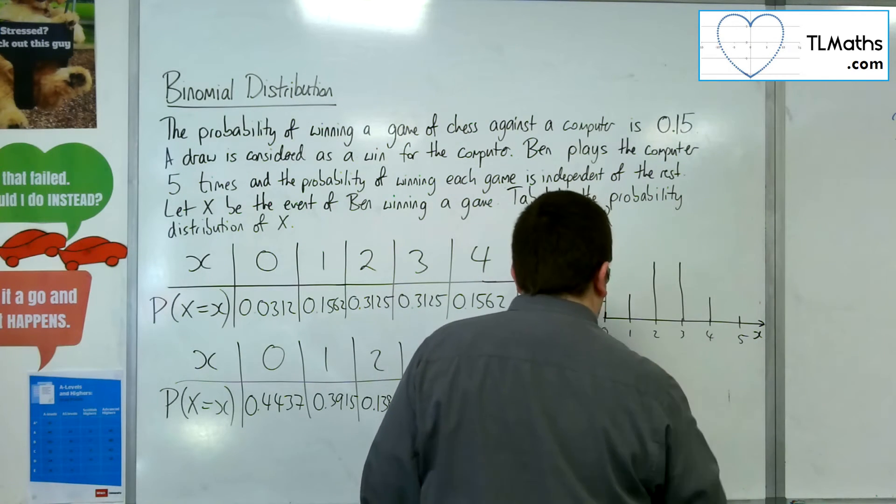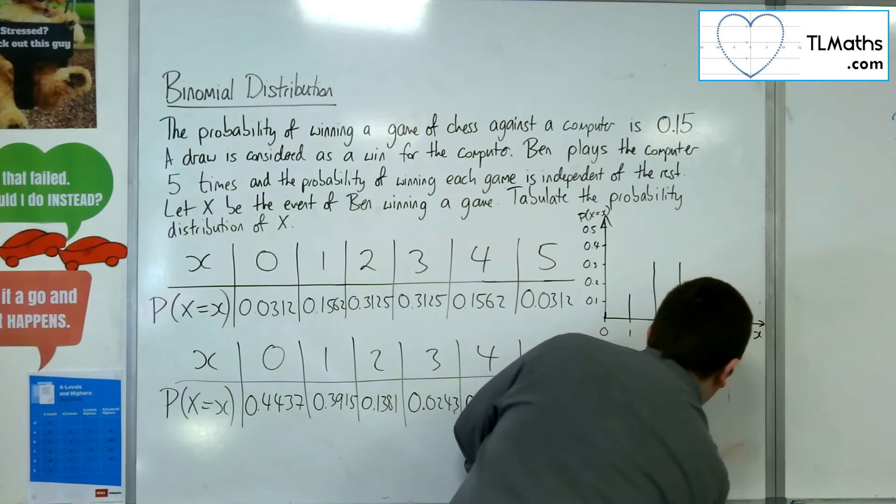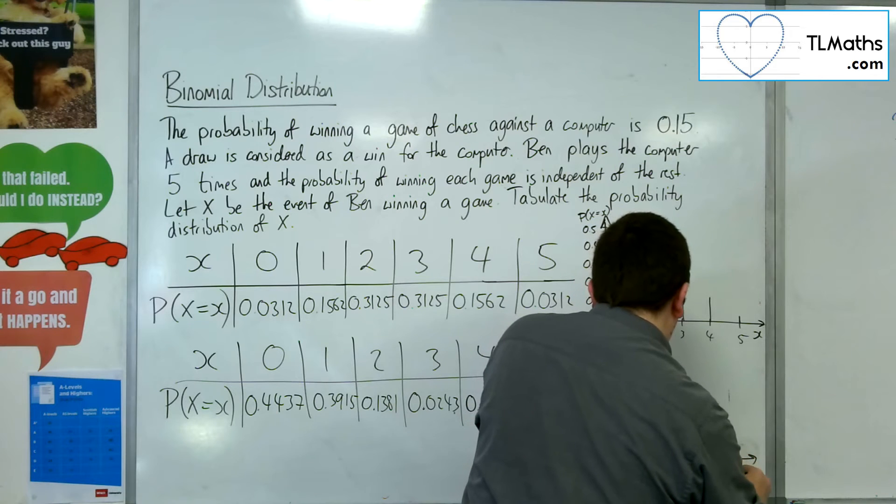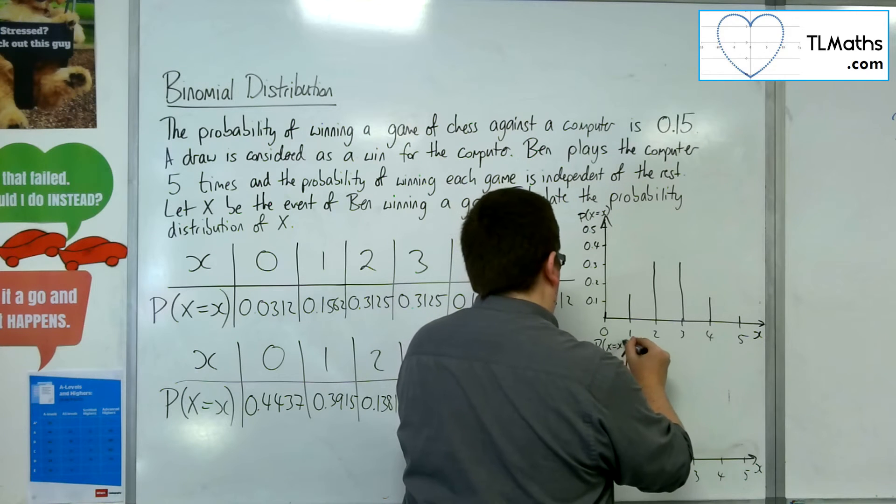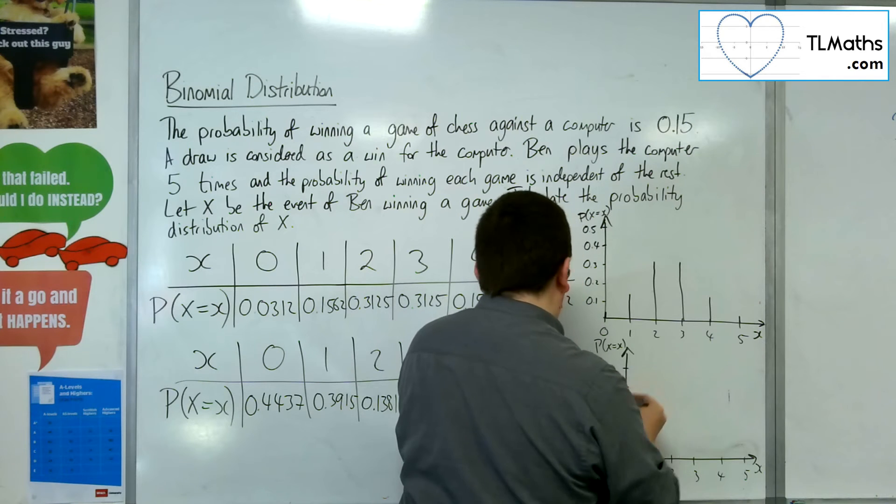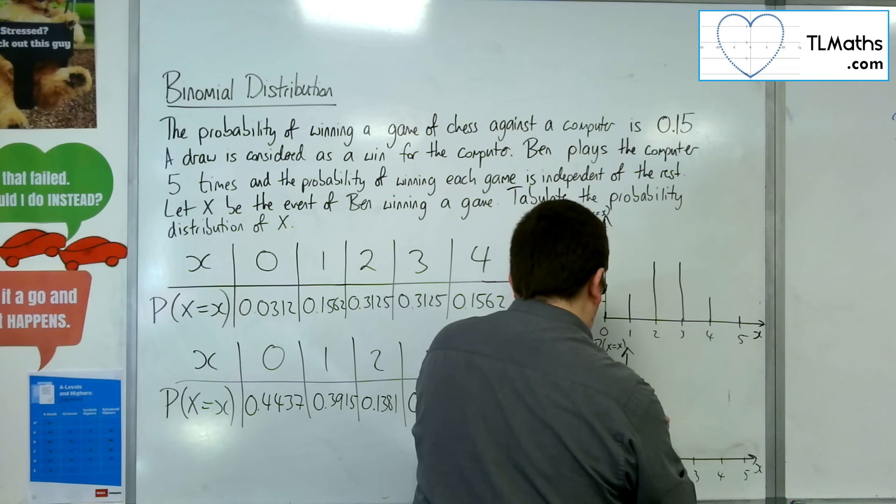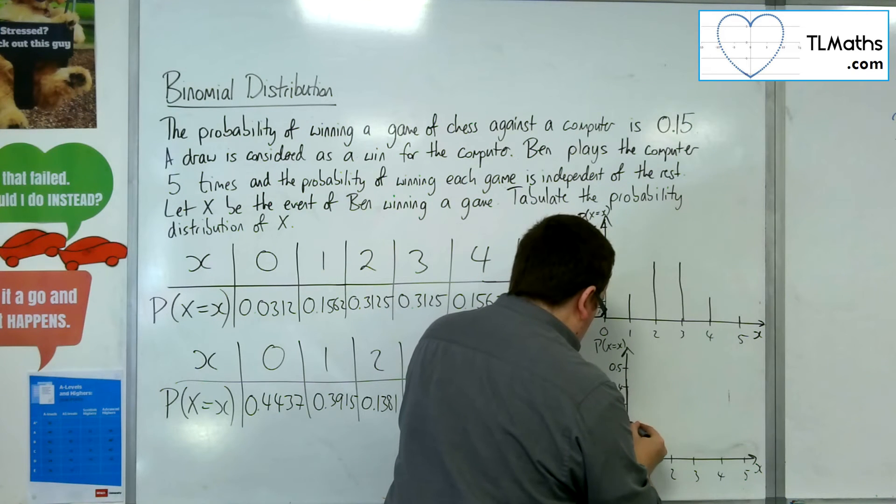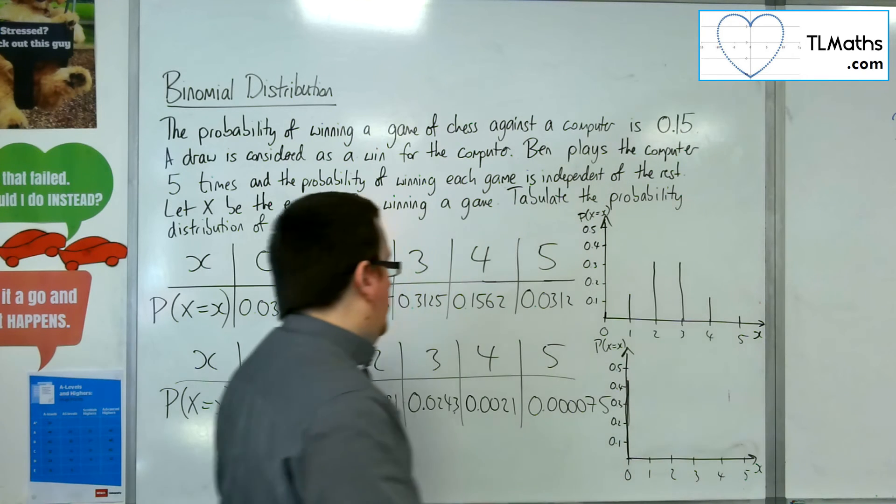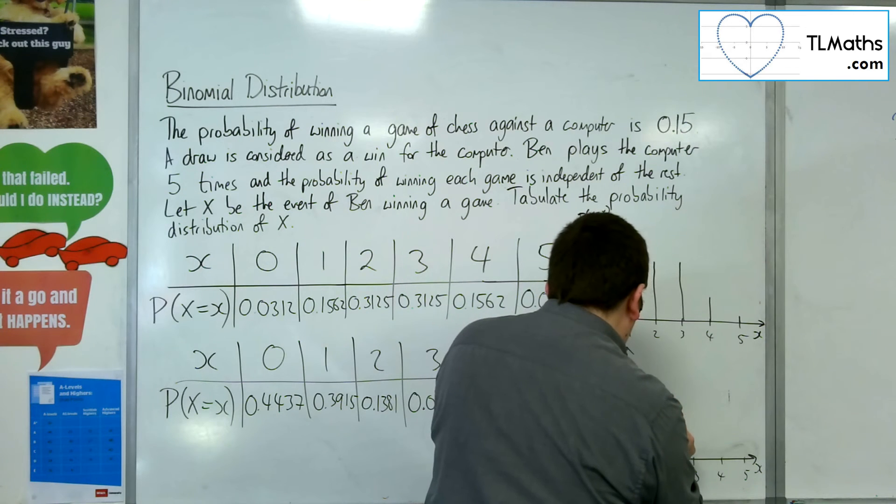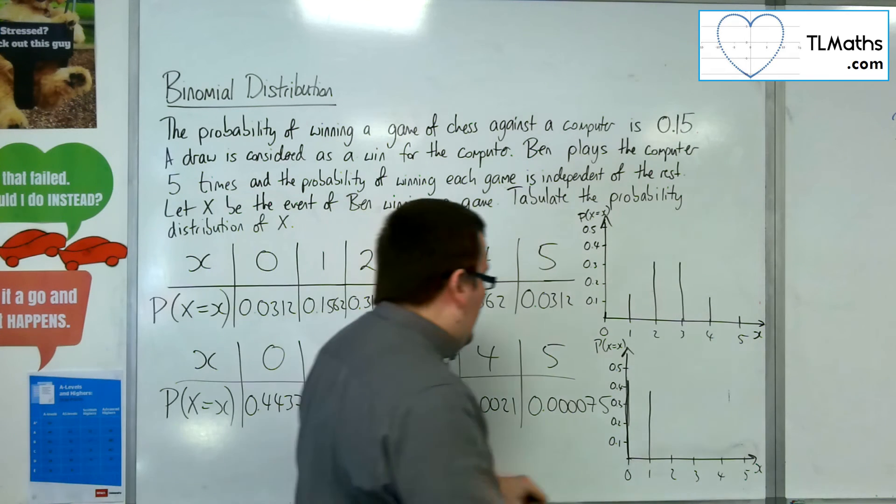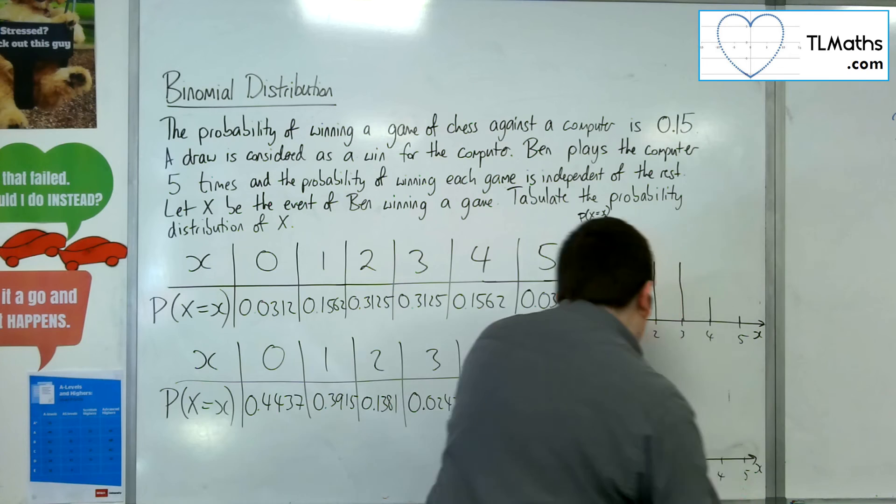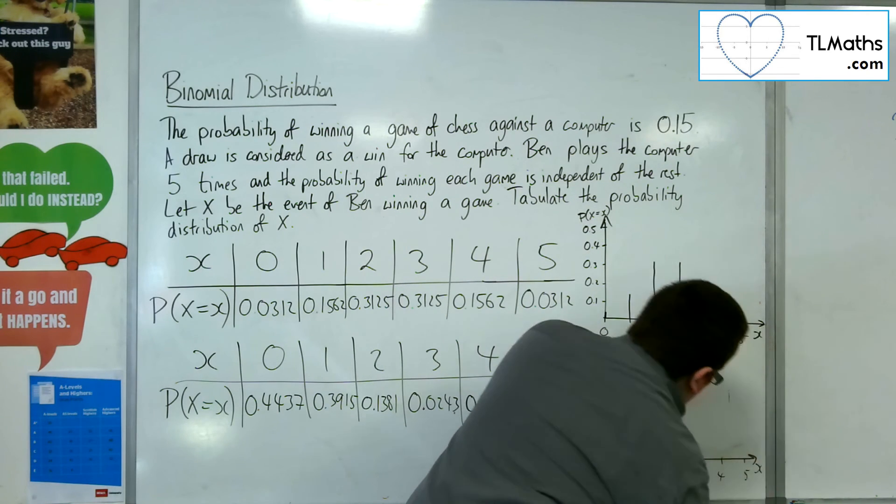So if you were to draw it, much like we've done there. Let me straighten that up a bit. So we've got 0, 1, 2, 3, 4, 5 along the bottom, and 0.1, 0.2, 0.3, 0.4, 0.5 up the side. So the probability of getting 0 is 0.4437, something like that. Then we've got 0.3915. Then we've got 0.1381, so it's about there. Then we've got 0.0243, so it's very small in there. Then 4 is even smaller, and then 5 you probably can't even see.